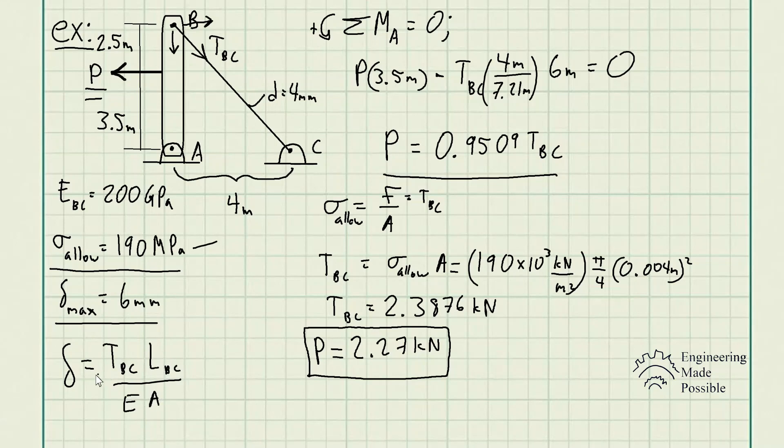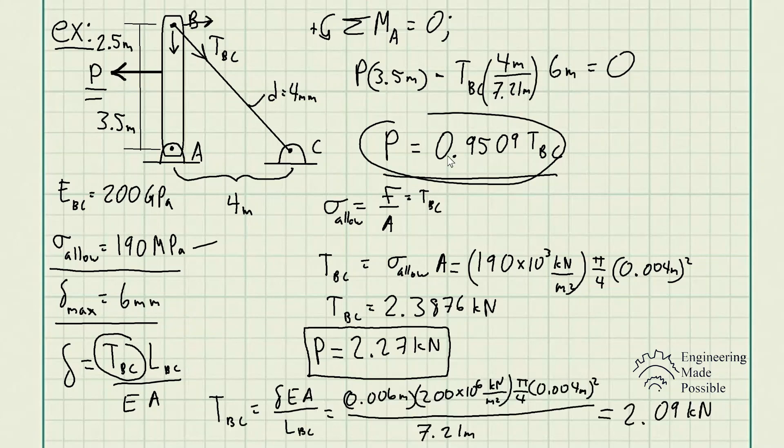We see using this criteria, we could also solve for the tension in cable BC, and then we could use this correlation again to solve for that maximum load. So we get the maximum tension in cable BC is 2.09 kilonewtons, which gives us the maximum external load that we can apply to not exceed the maximum deformation of 6 millimeters is 1.99 kilonewtons.